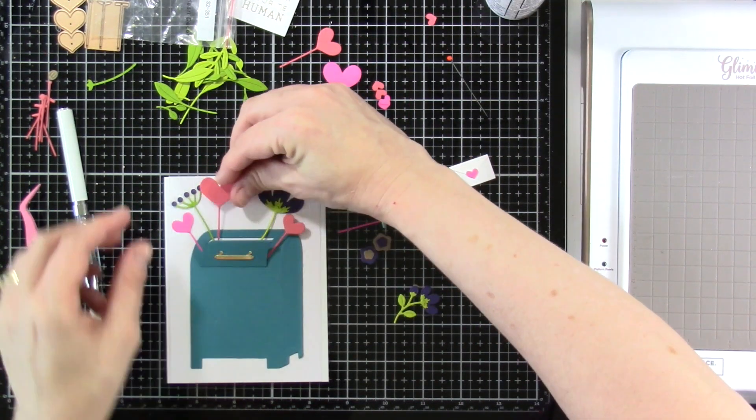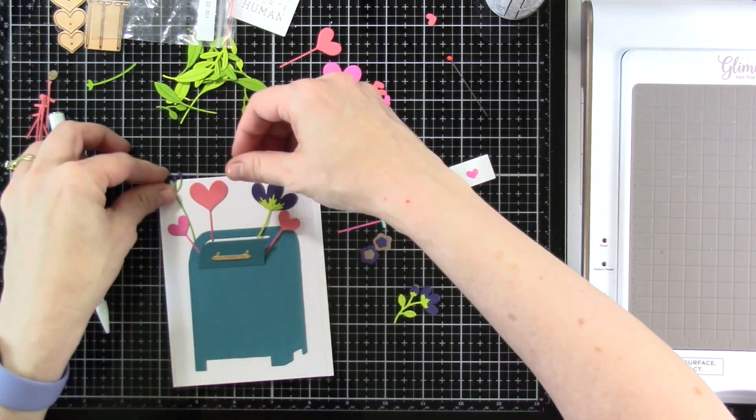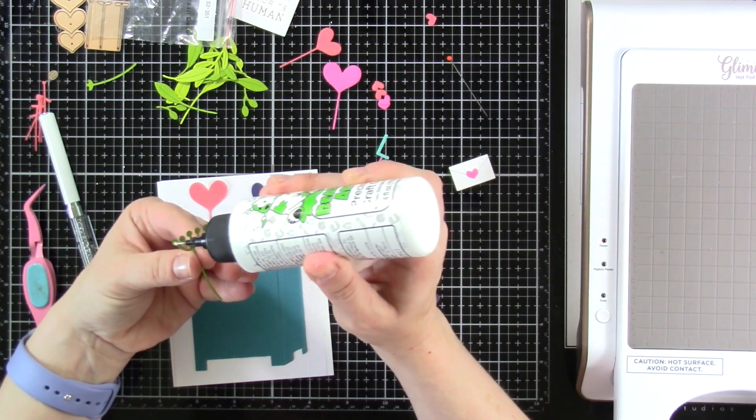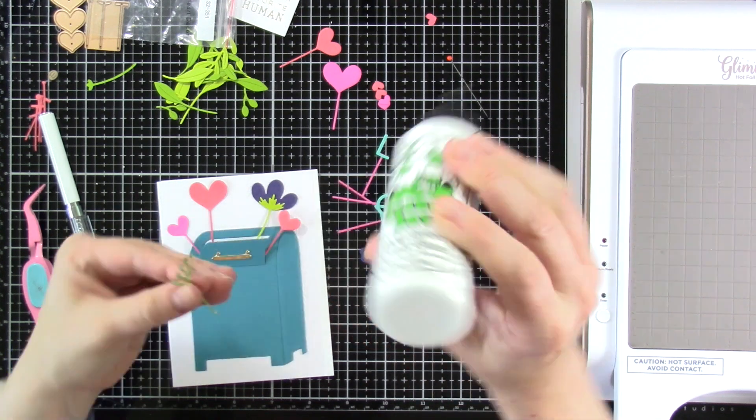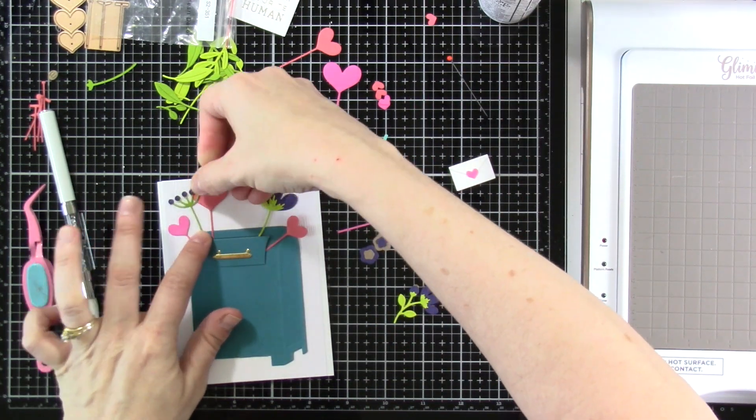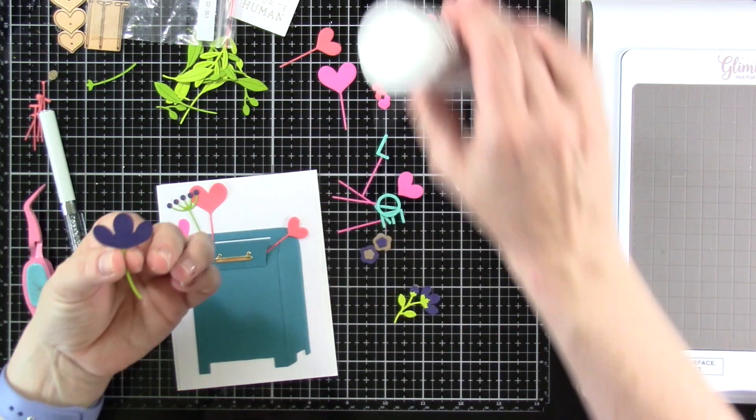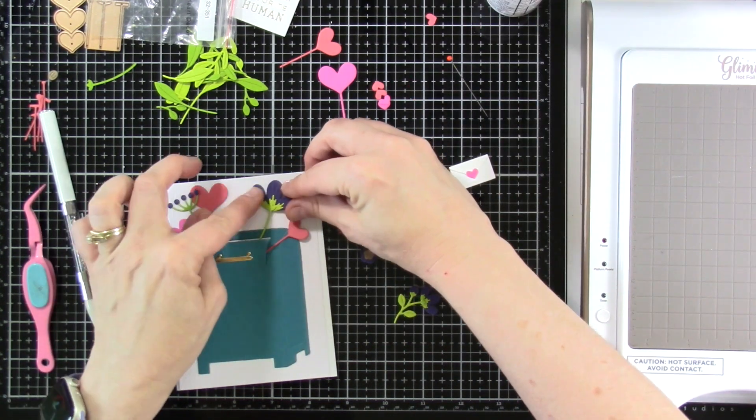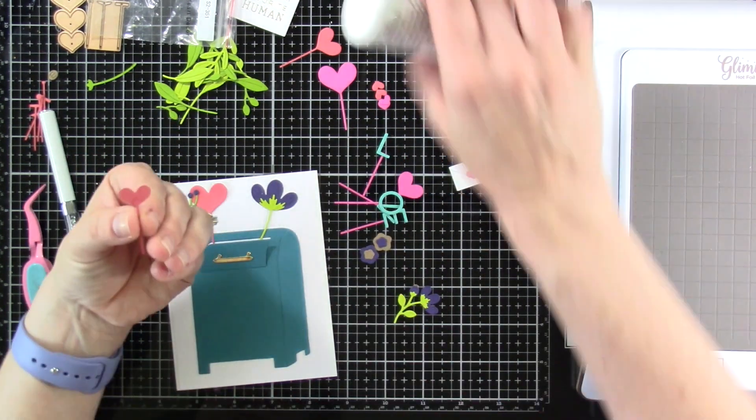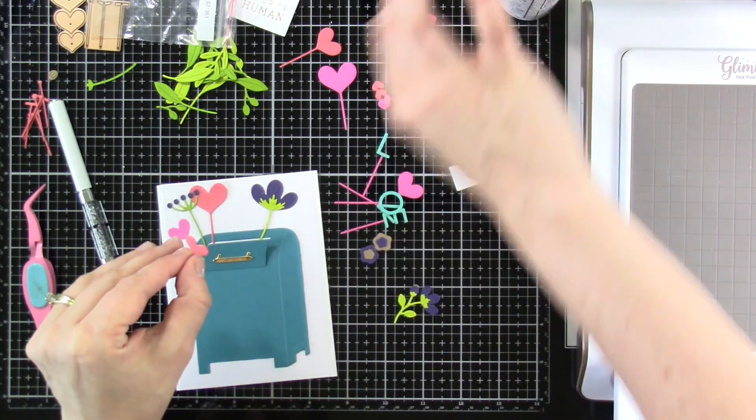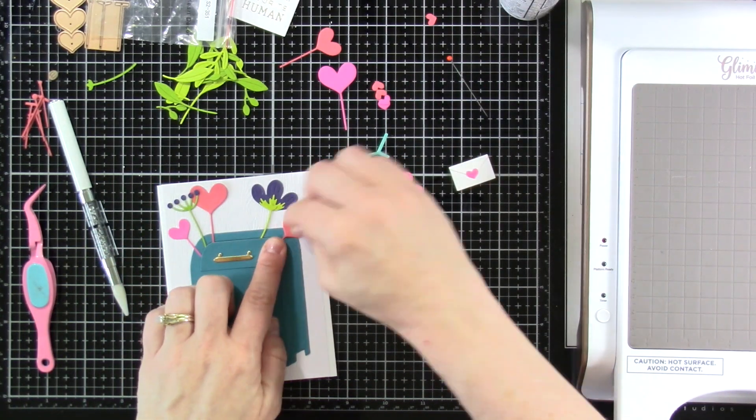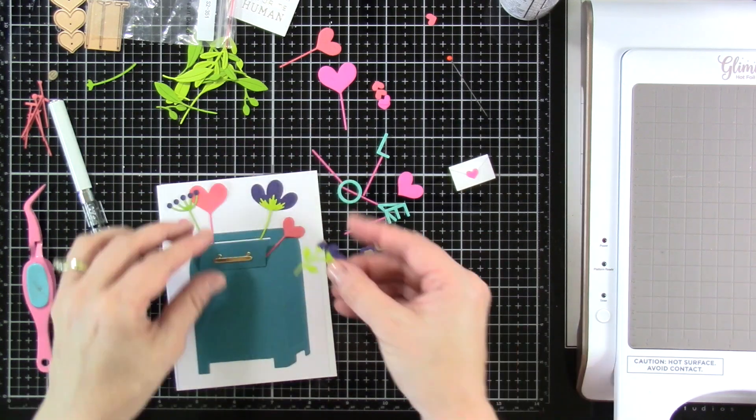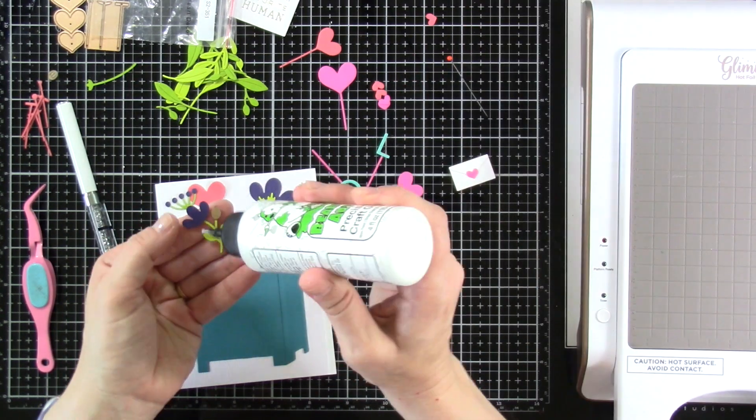I played around with placement for a little while and we've got our little hearts. You wouldn't have to use the stems on those, but I thought those were fun to have their little pieces holding them like they're popping out. You've got your different flowers. So much fun. The Christmas one, I think, would be a blast as well.